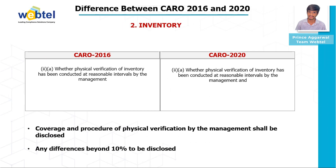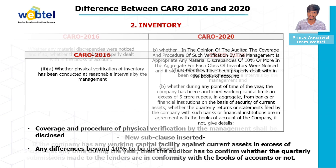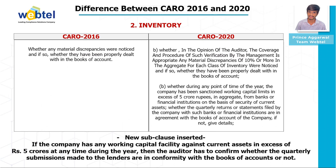The second clause is Inventory. The auditor has to ensure that the coverage and procedure of physical verification by the management shall be disclosed. Any differences beyond 10% are to be disclosed by the management. A new sub-clause inserted in clause two states that if the company has any working capital facility against current assets exceeding 5 crore rupees at any time during the year, the auditor has to confirm whether the quarterly submissions made to the lender are in conformity with the books of accounts.